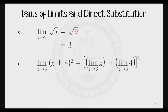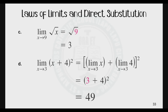Next, find the limit of x plus 4 squared as x approaches 3. Simply substitute 3 directly for x: 3 plus 4 squared is 7 squared, which is 49.